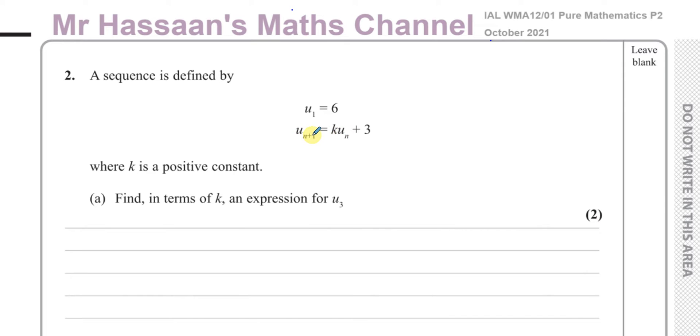So U(n+1) is the next term, and K*Un is the previous term. How to get to the next term from the term that you're at now. So U1 equals 6, and you want to find what U3 is.